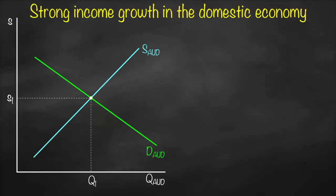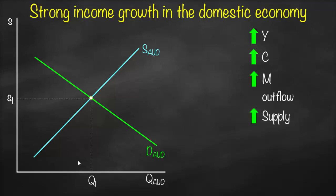Let's talk about the second force: strong income growth in the domestic economy in Australia. If Australia has higher output and higher income, Australians need to consume more. To consume more, we need to import more from foreign countries and the rest of the world. Higher imports means higher outflow. Outflow affects supply, so we'll have a higher supply, meaning a shift to the right. Therefore, we shift our supply curve for Australian dollars to the right.